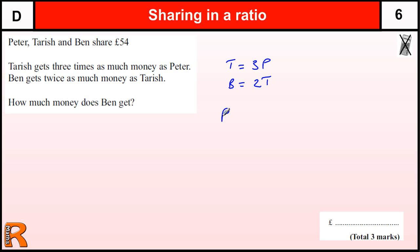So if we start off with Peter, or how much Peter gets, Tarish is going to get three times that, so he's going to have three lots of what Peter gets. And Ben is going to get twice what Tarish gets. Tarish gets three times Peter, so Ben's going to have six times what Peter's got. So the ratio is one to three to six.